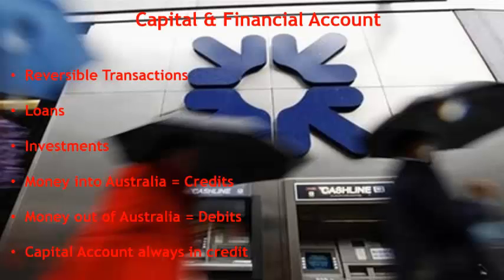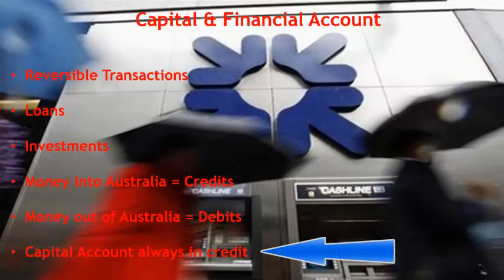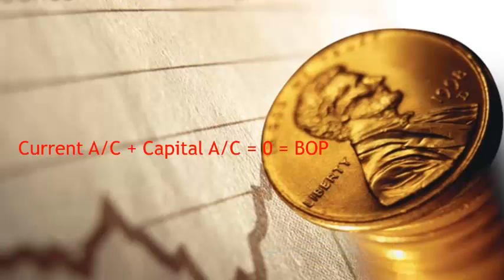The other side of the story is the capital and financial account. Here we're talking about reversible transactions — things like loans and investments. If a foreign bank makes a loan to Australia, they obviously expect to have that loan paid back plus interest. Similarly, if someone makes an investment in Australia — whether it's real estate, shares, or a company — they expect to get profits and dividends as a return. Once they sell their investments or realise back their loans, they get that money back, hence it's called a reversible transaction. Money coming into Australia is a credit and money going out is a debit. In order to balance our books, the capital and financial account is always in credit, which effectively makes up the deficit for the current account.